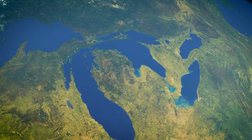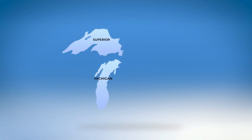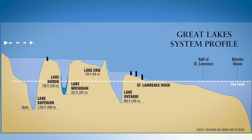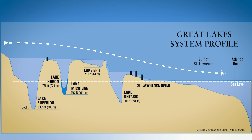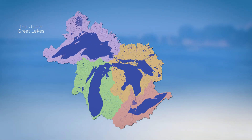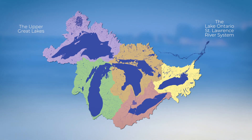The Great Lakes watershed includes a series of interconnected lakes shared between Canada and the United States. From west to east they are: Superior, Michigan, Huron, Erie, and Ontario. Water flows from areas of higher elevation to lower elevation and eventually drains into the Atlantic Ocean through the St. Lawrence River.